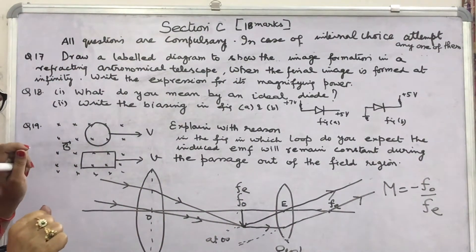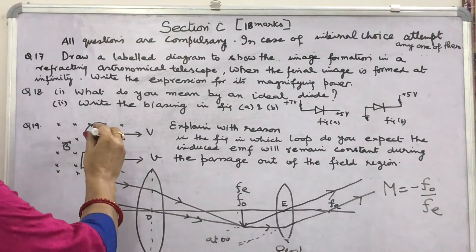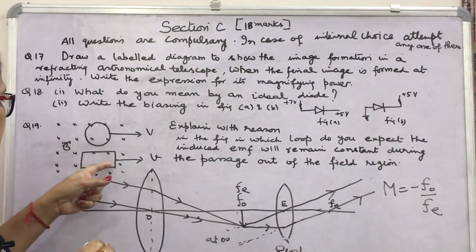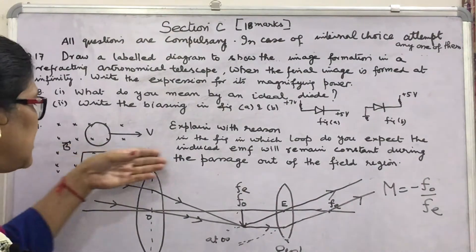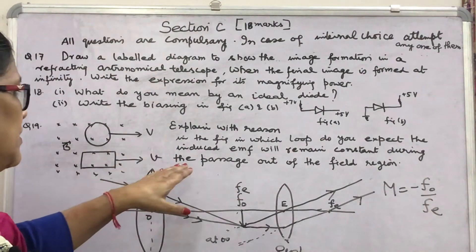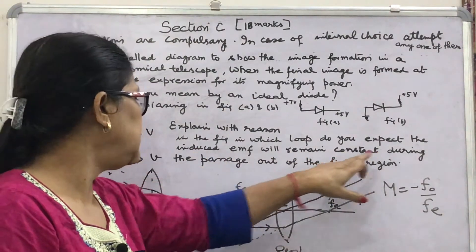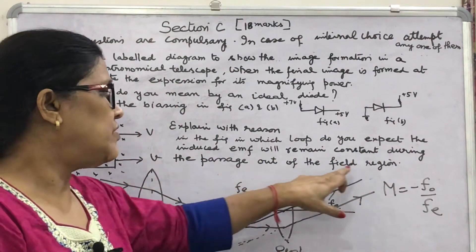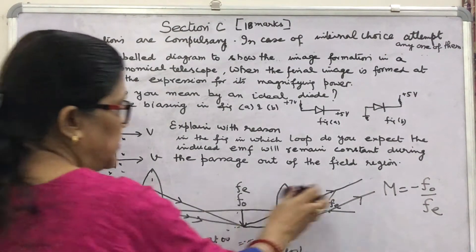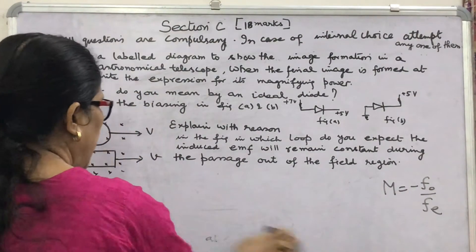In question 19, it is a very interesting question. In a cross magnetic field — that is, the magnetic field is perpendicular to the plane of paper, directed inward — a circular conducting loop and a rectangular conducting loop are both taken out with constant speed V. You have to find in which loop the induced EMF will remain constant during the passage out of the field region. The formula for induced EMF is d-phi by dt, where phi is magnetic flux.